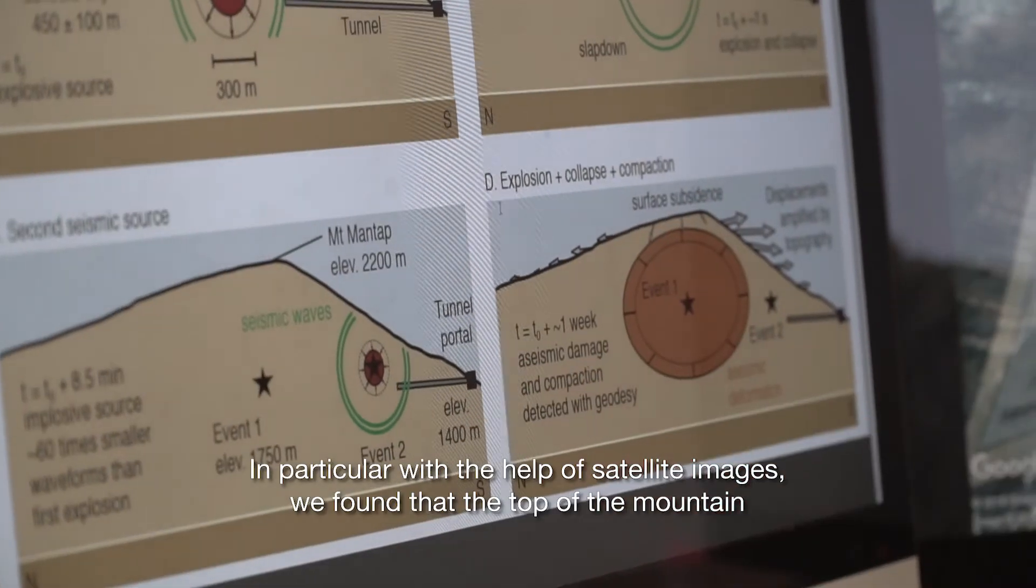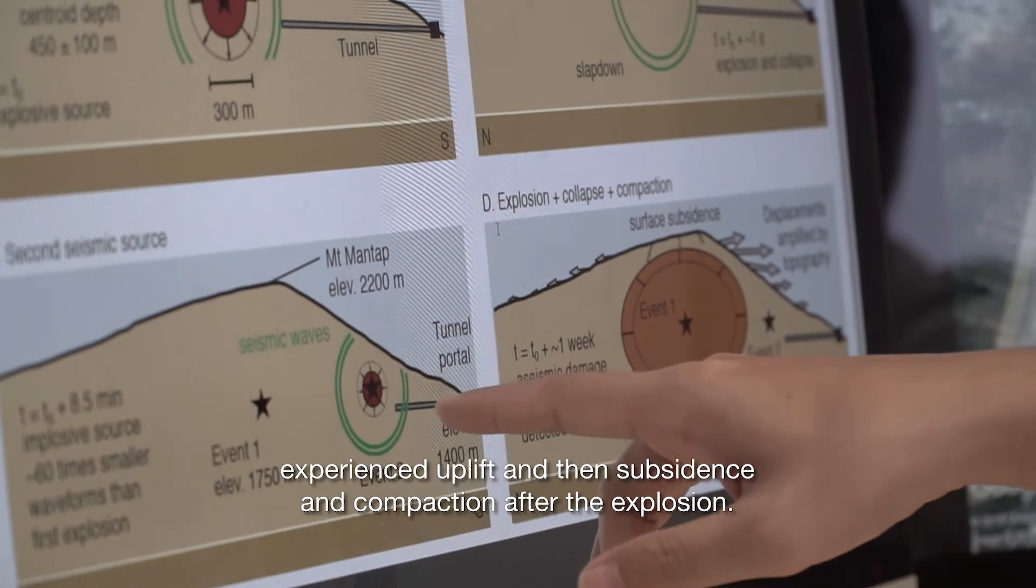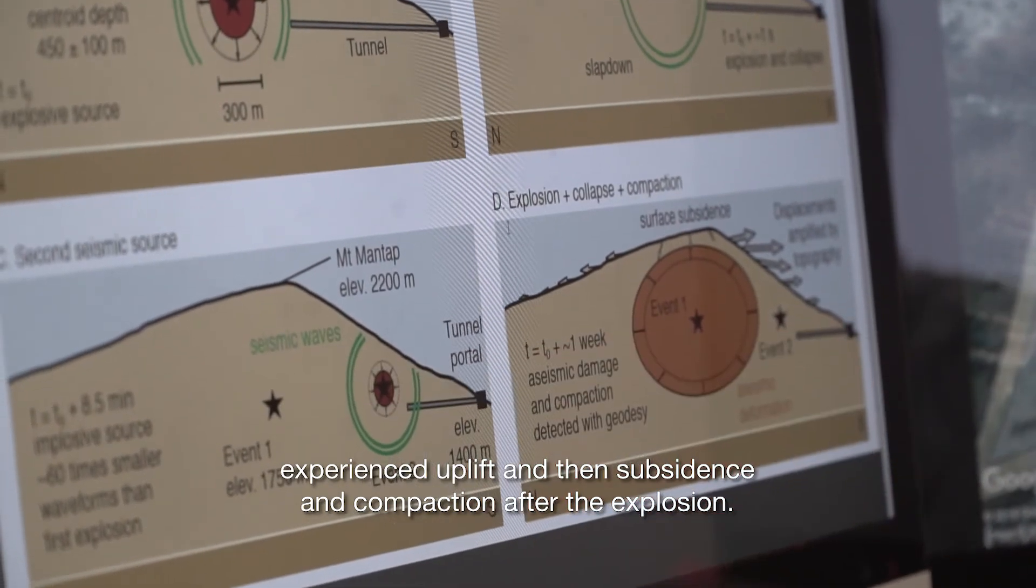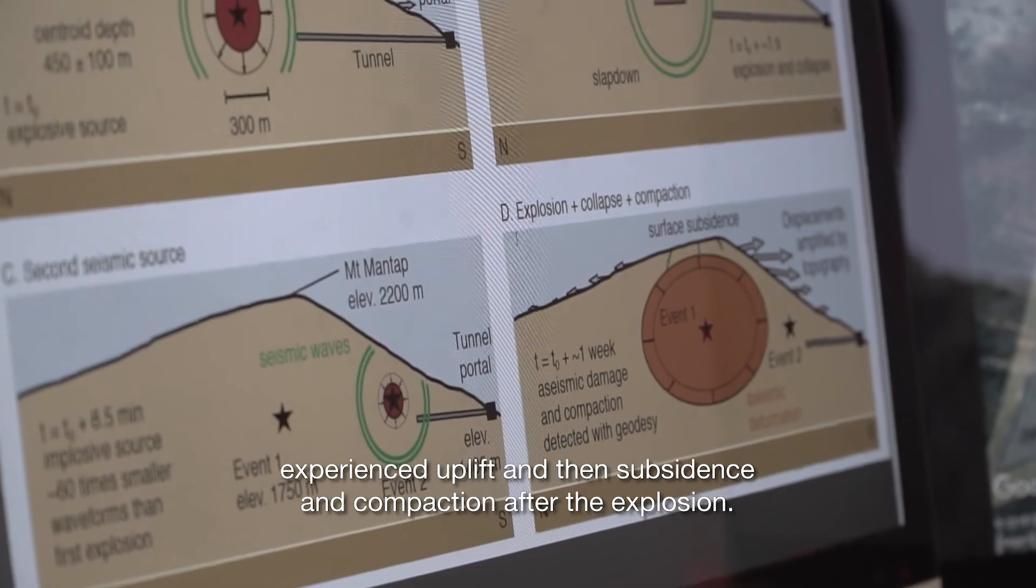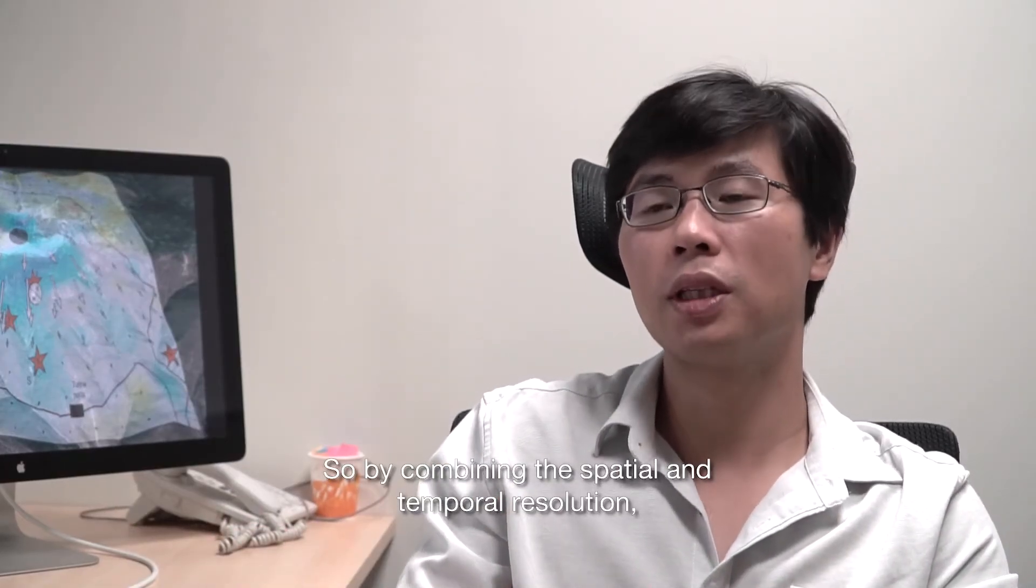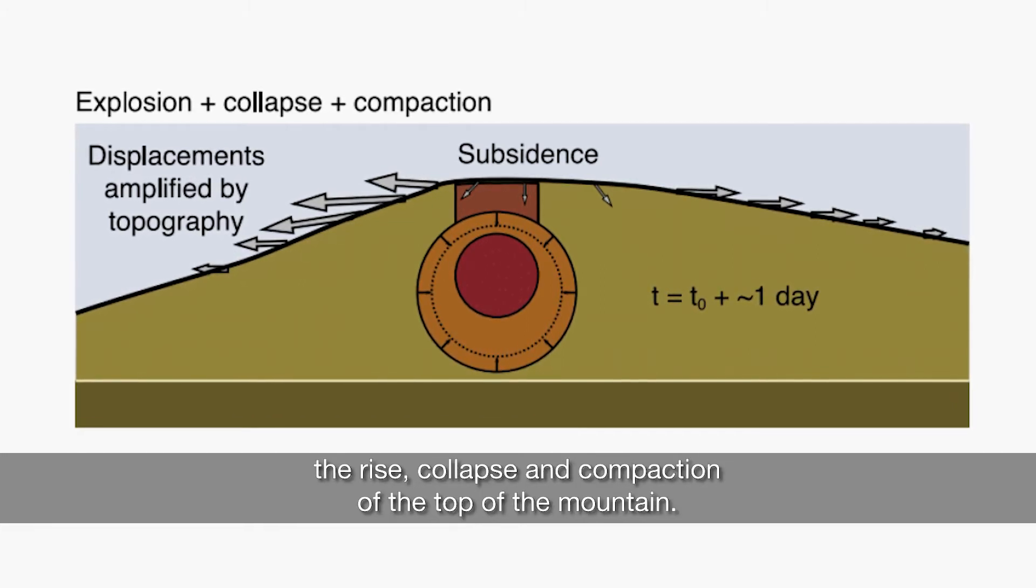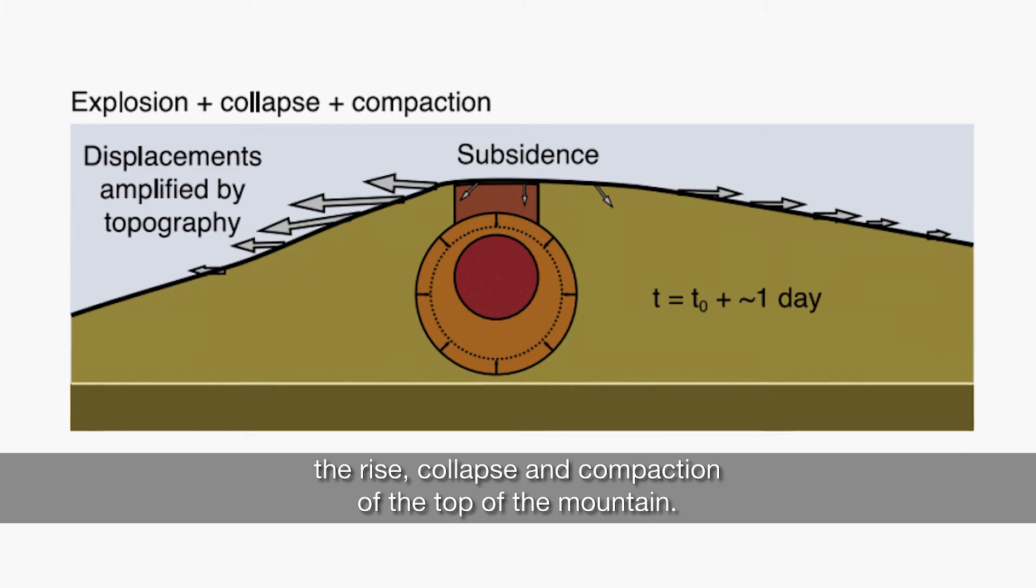With the help of satellite images, we found that the top of the mountain experienced uplift, then subsidence and compaction after the explosion. Combining the spatial and temporal resolution, we can make this kind of discovery to understand the rise, collapse, and compaction of the top of the mountain.